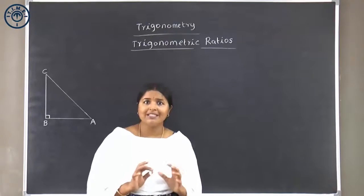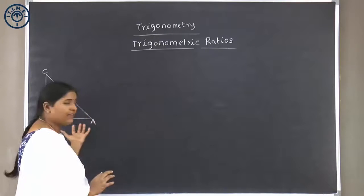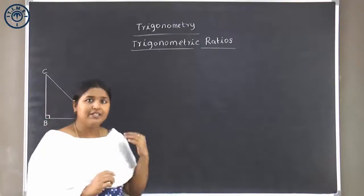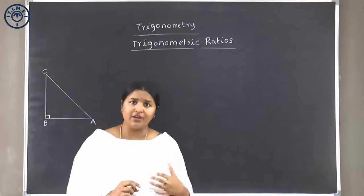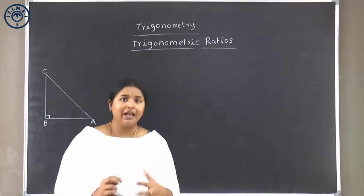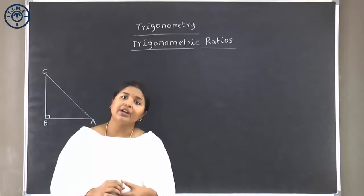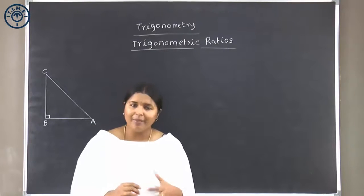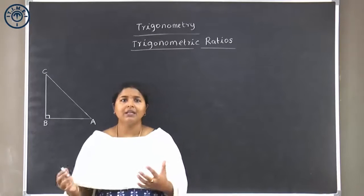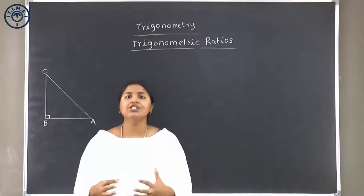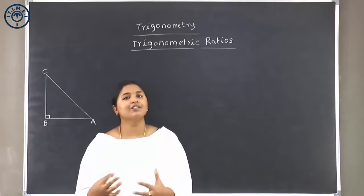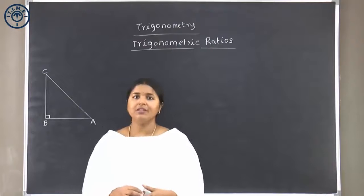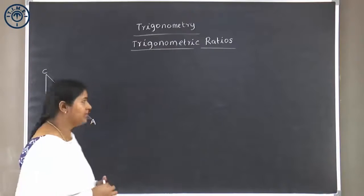Because all three sides in a right triangle have special names, I am going to first name the sides of the right triangle, and then we are going to look at the trigonometric ratios. Trigonometric ratios are nothing but the relationship between the three angles and the three sides of a right angled triangle. Let's begin with naming the right angled triangle.